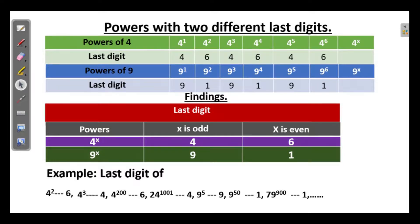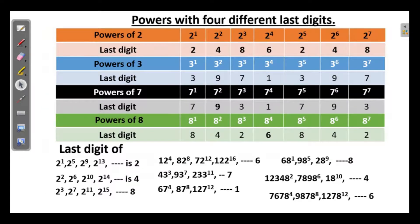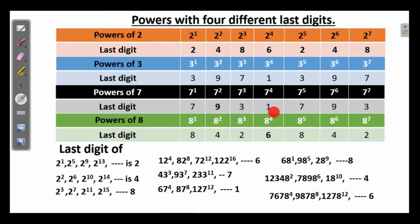Powers with 4 different last digits. We have already seen powers of 2, which follow the pattern 2, 4, 8, 6, 2, 4, 8, 6. And that of 3 is 3, 9, 7, 1, 3, 9, 7, 1. And powers of 7 have last digits in the pattern 7, 9, 3, 1, 7, 9, 3, 1. And of 8 is 8, 4, 2, 6, 8, 4, 2, 6.